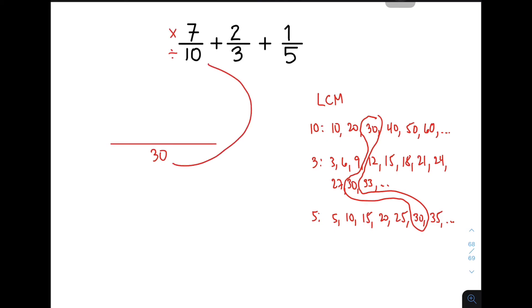30 divided by 10, that is 3, times 7, that will give you 21. 30 divided by 3, that will give you 10, times 2, plus 20. And 30 divided by 5, that is 6, times 1, that will give you plus 6.